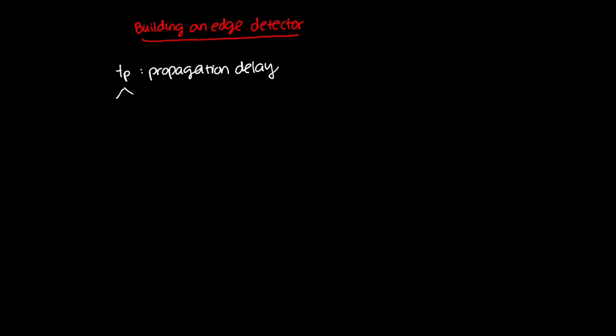In this video I'm going to show you how to build an edge detector, and to do so we're going to take advantage of a phenomenon called propagation delay. Propagation delay is usually denoted T subscript P, and furthermore I can subdivide these into TPHL and TPLH.